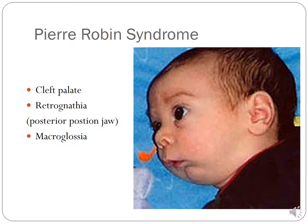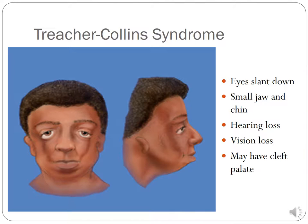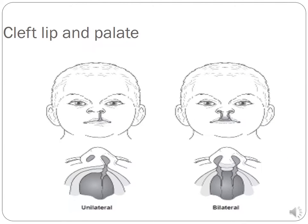Syndromes that can cause hearing problems include Pierre-Robin syndrome, which typically includes cleft palate, retrognathia with a small jaw, and macroglossia. Treacher Collins syndrome classically presents with downward-slanting eyes, small jaw and chin, hearing loss, vision loss, and may have a co-occurring cleft palate. Cleft lip and cleft palate can occur alone or together, unilateral or bilateral, and very frequent ear infections go along with cleft palate.